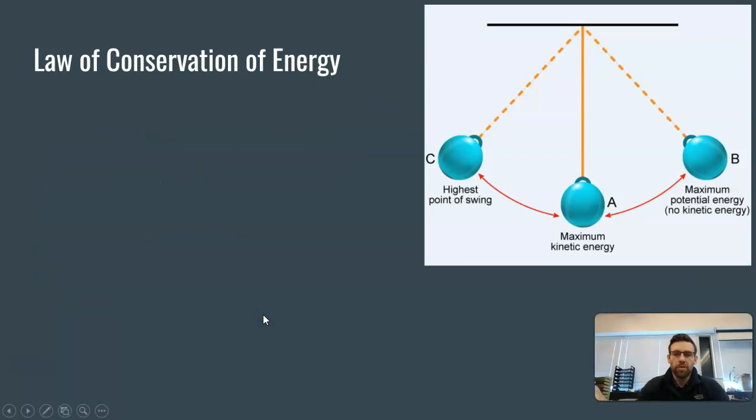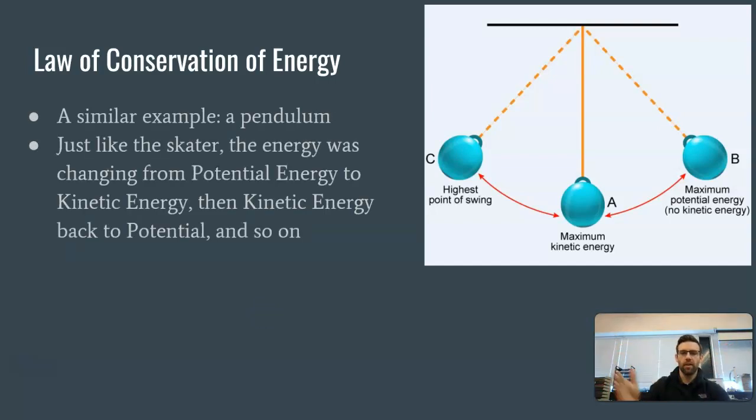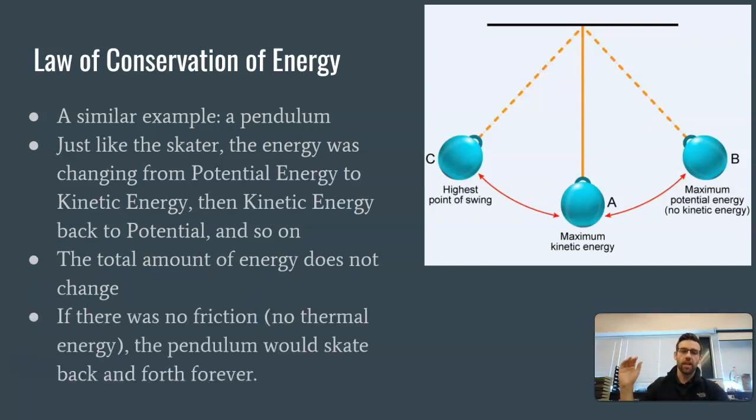Another example, a very similar example, is a pendulum. When a pendulum swings back and forth, it has potential energy, and then it goes to kinetic energy, and then it goes back to potential energy, and it just swings back and forth, back and forth. The total amount of energy would not change. And again, if there was no friction, the pendulum would just go back and forth. Once you add friction, the total amount of energy still does not change. The one thing that does change is some of that energy gets turned into thermal energy, which is really no longer useful. That means the pendulum eventually will slow down.